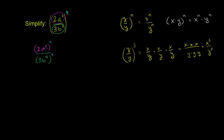So 2a squared to the fourth power is going to be equal to 2 to the fourth power times a squared to the fourth power. And then all of that over 3b to the fifth to the fourth power, which is 3 to the fourth power times b to the fifth to the fourth power.